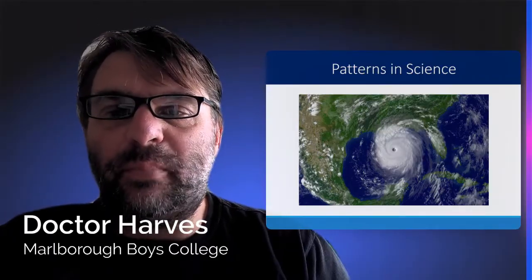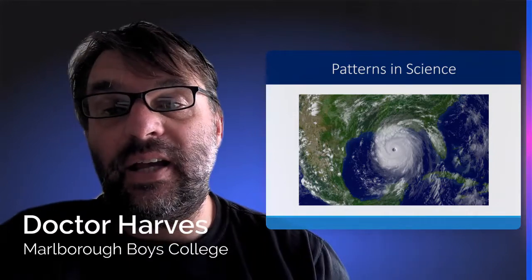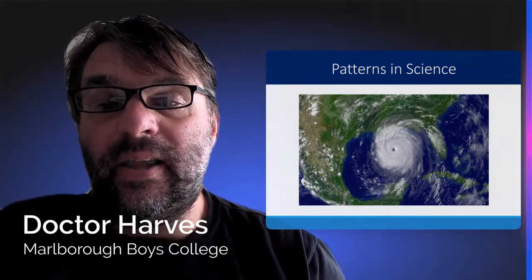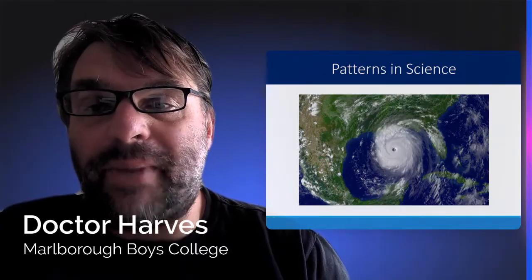We again see patterns in science with the weather systems, which have improved over hundreds of years. Now we can see about seven days in advance the weather that's going to occur in our backyard. Again, these are the patterns of the universe.